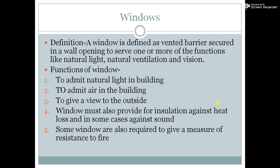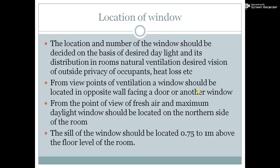Next that is windows. A window is defined as a vented barrier secured into the wall opening, to serve one or more functions like natural light, natural ventilation, and vision. The functions of a window are: to admit natural light into the building, to admit air into the building, to give a view to the outside, to provide insulation against heat loss, and in some cases against sound. Some windows are also required to give resistance to fire.